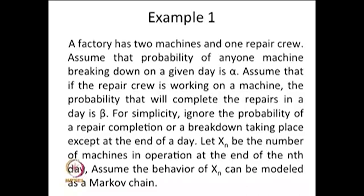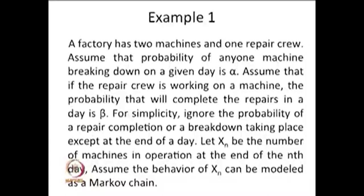Assume that the probability of any one machine breaking down on a given day is alpha. Assume that if the repair crew is working on a machine, the probability that they will complete the repairs in a day is beta. For simplicity, ignore the probability of a repair completion or a breakdown taking place except at the end of a day — that means we observe the system at the end of the day to count how many machines are working.